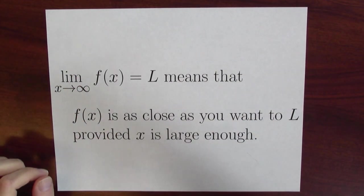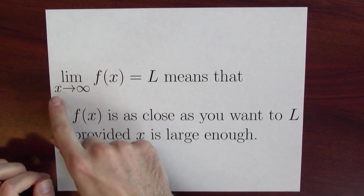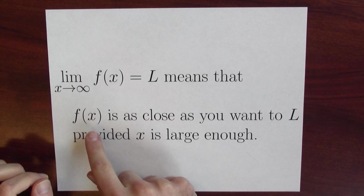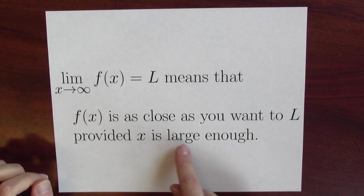Here's how we're going to get around talking about a big number. We're going to talk about the limit. To say the limit of f of x as x approaches infinity equals L means that f of x is as close as you want it to be to L, provided x is large enough.